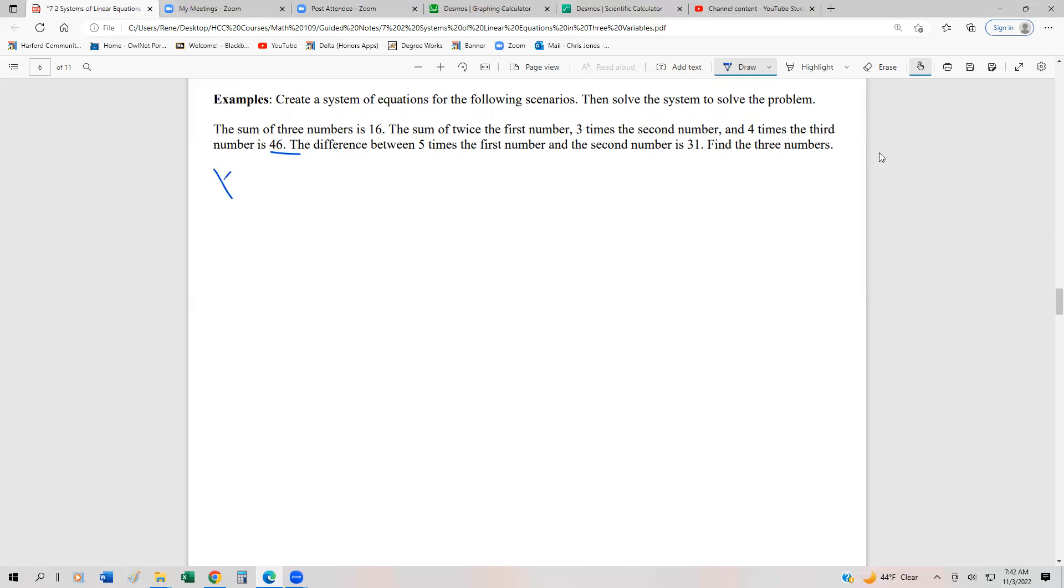All right. So let's let x be the first number, let's let y be the second number, and let's let z be the third number. The sum of the three numbers is 16. Sum meaning we add them up. So that's one equation.